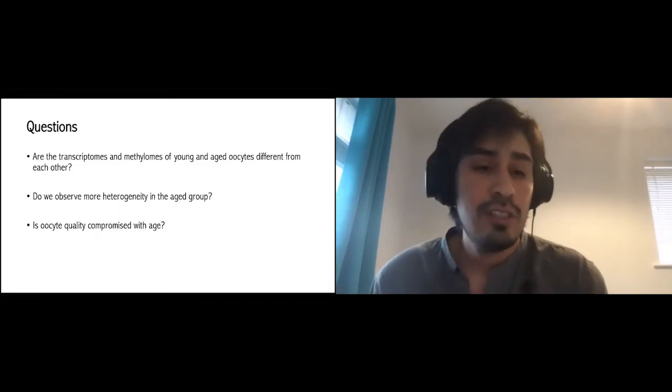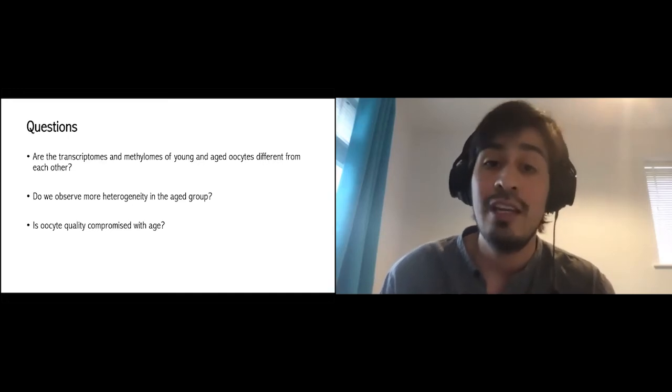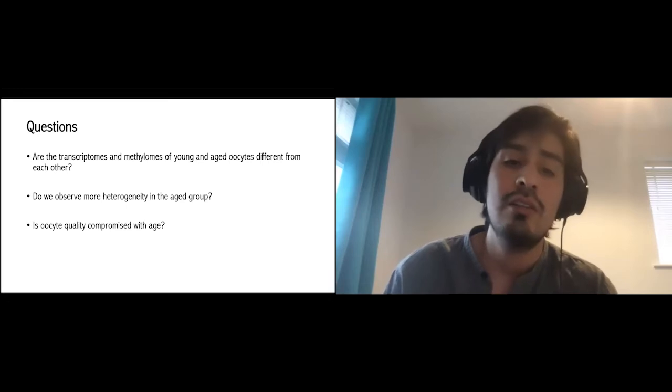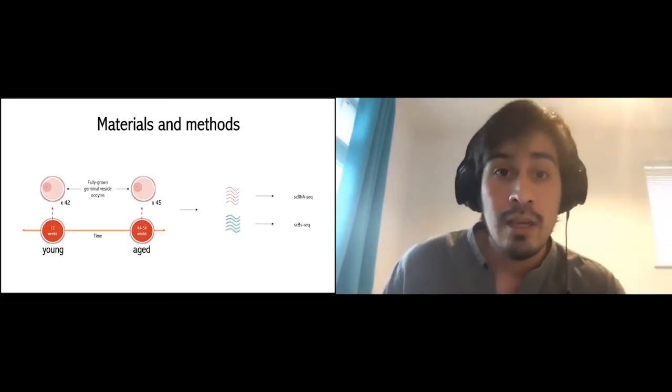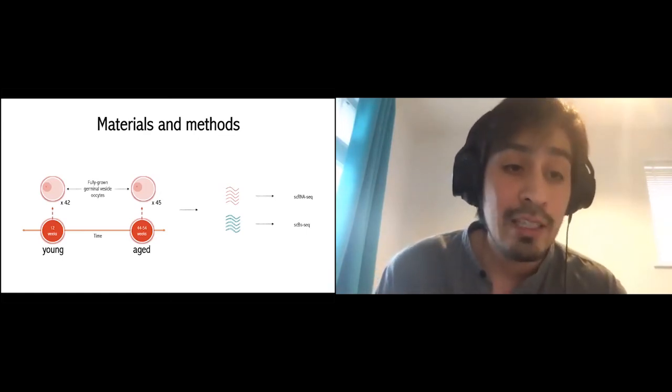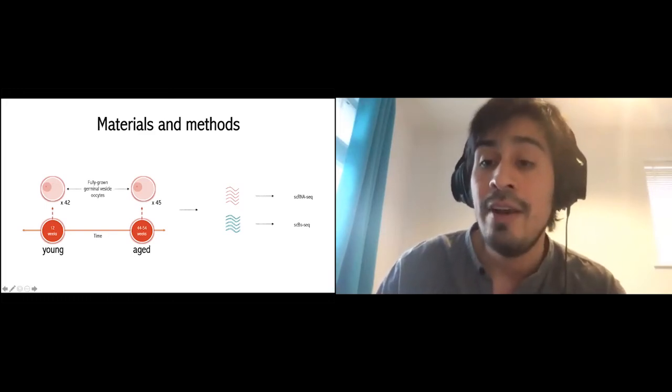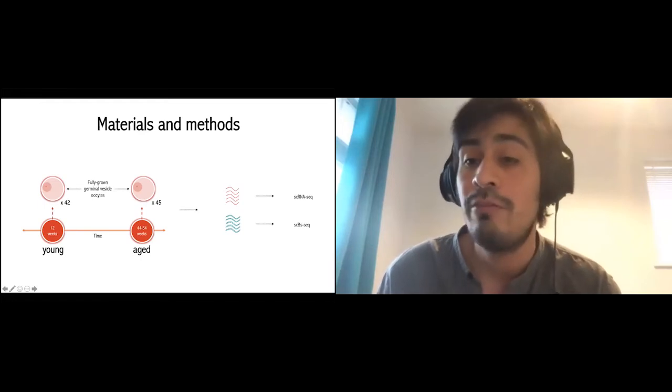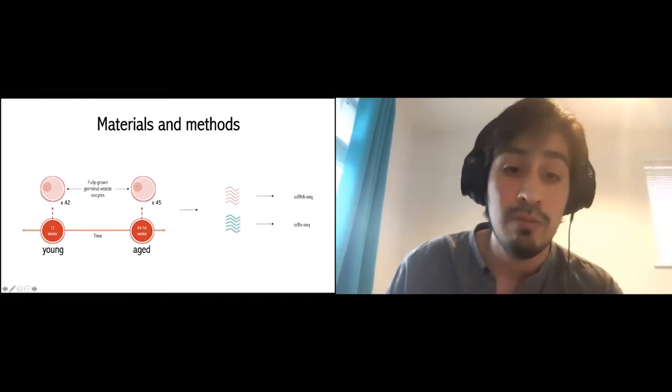Recently with the development of single cell techniques, that allowed us to study the oocytes as we wanted to. The questions that we had for this study: first of all, are the transcriptomes and the methylomes of young and aged oocytes different from each other? The second question is, do we observe more heterogeneity in the age group? And third, is the oocyte quality being compromised with age or is it just irrelevant? Now, first of all, we collected oocytes from young mice and old mice. From each oocyte, RNA and DNA were extracted so that we can perform single cell RNA sequencing and single cell bisulfite sequencing from each oocyte.